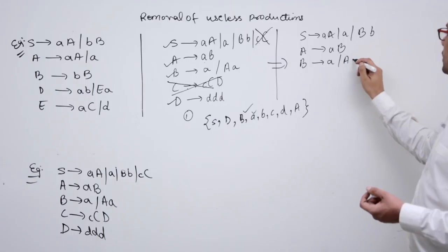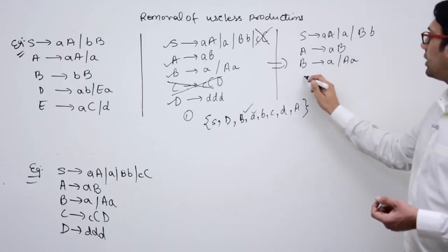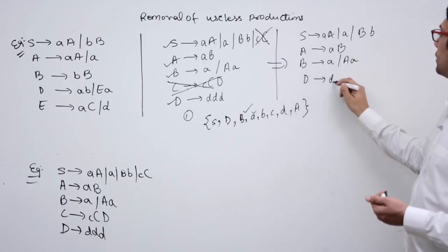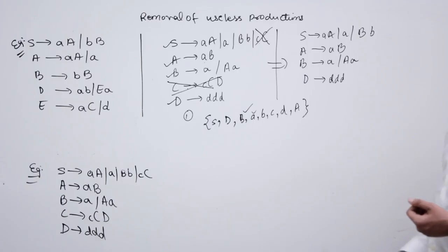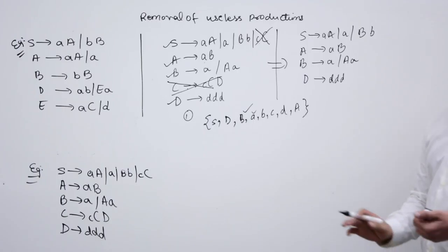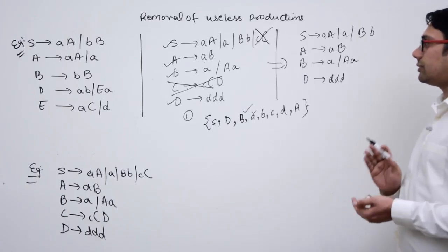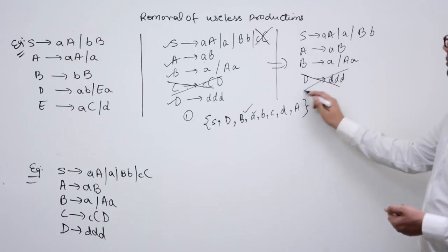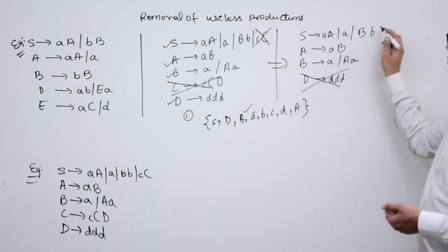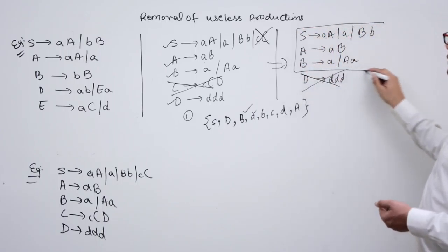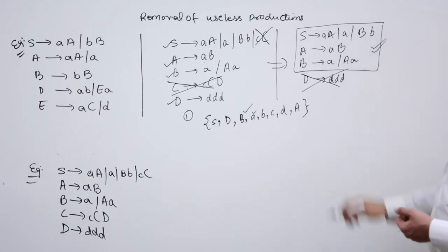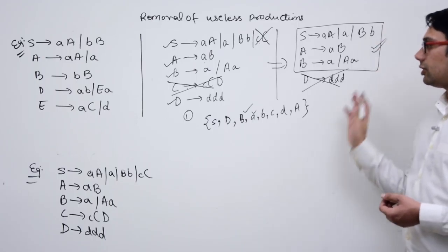After removing capital C, we get: S derives A, A slash small a slash b, B; A derives ab; B derives small a slash a; and D derives dddd. Now, D is not reachable from the start symbol, so we remove it too. The resulting grammar has all useful productions.